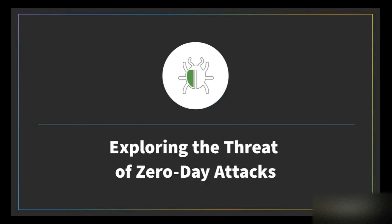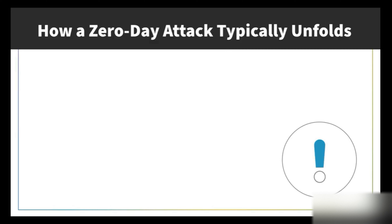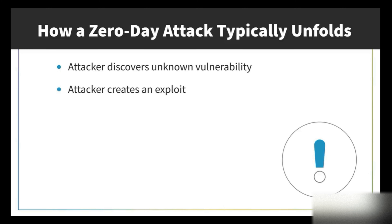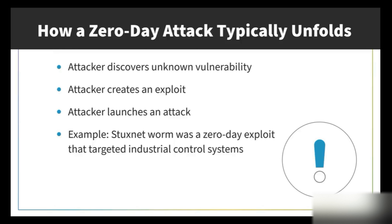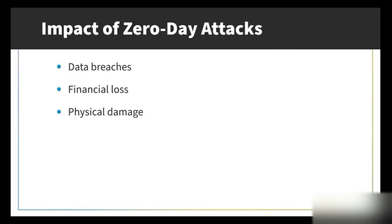A zero-day attack exploits a vulnerability in software or hardware that is unknown to the vendor and users. Because no one knows about the flaw, they haven't had a chance to patch it. Typically, an attacker discovers the unknown vulnerability, creates an exploit, and launches an attack — often causing significant damage before anyone knows what's happening. The infamous Stuxnet worm was a zero-day exploit targeting industrial control systems, causing widespread damage before it was discovered. Zero-day attacks can lead to data breaches, financial loss, and even physical damage.